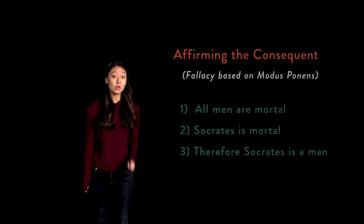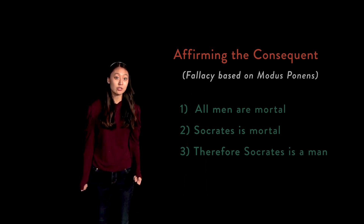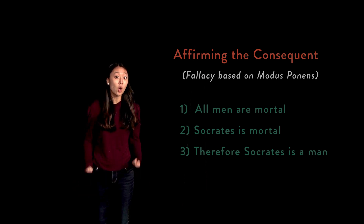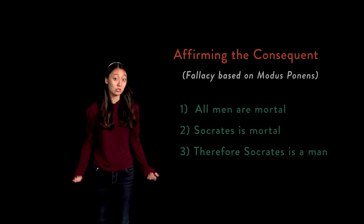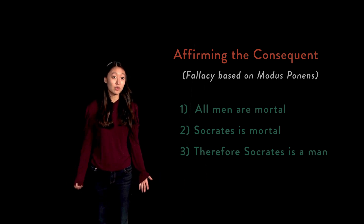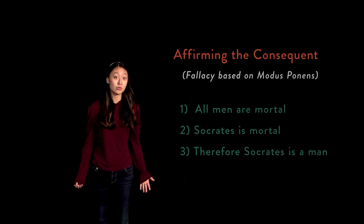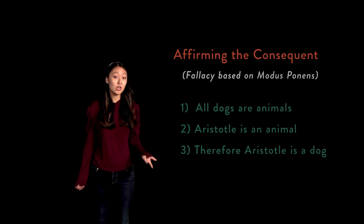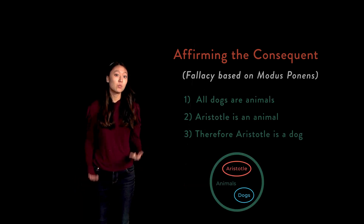It is important to note that while the above syllogism has a true conclusion, it is still fallacious. A fallacious type of inference can sometimes give a true conclusion, but many times it does not. In logic, we care about the types of inference that always give true conclusions if the premises are true. Here's an example of where affirming the consequent fails to give a true conclusion: 1. All dogs are animals. 2. Aristotle is an animal. 3. Therefore, Aristotle is a dog. We can visualize where we went wrong using Euler circles.